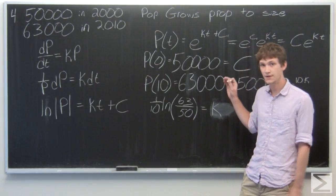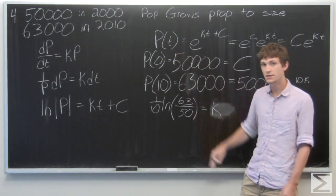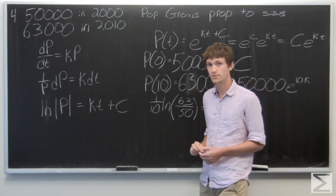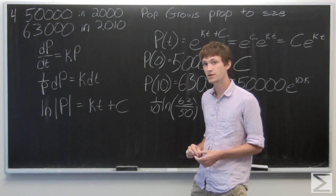Now we can plug this value of k into our P of t equation and then we're going to solve for P of t at time 11 to find our population in year 2011.